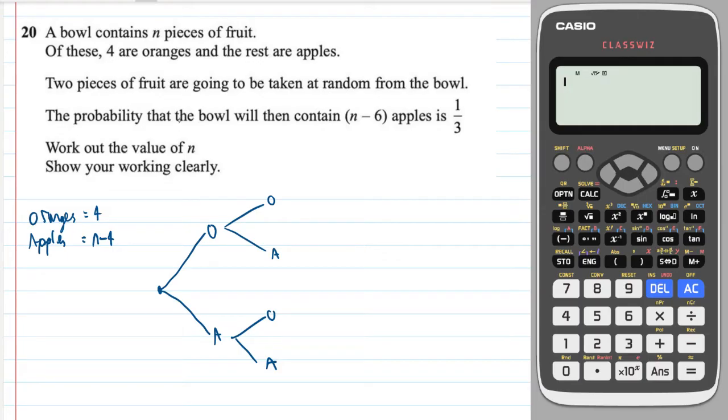The probability that the bowl will contain n minus six apples is one third. Okay, so in the first instance, if you take an apple away, then you'll be left with n minus five. And then if you take another apple away, you'll be left with n minus six.